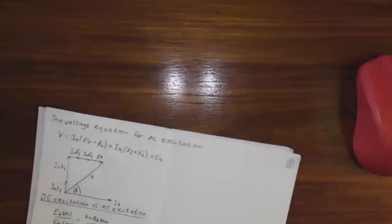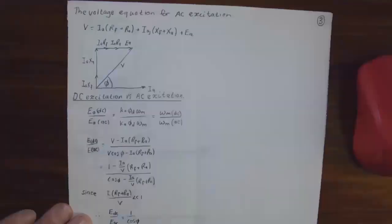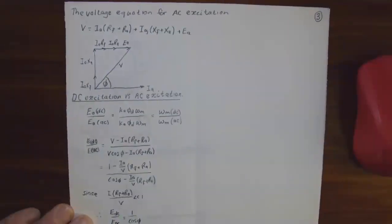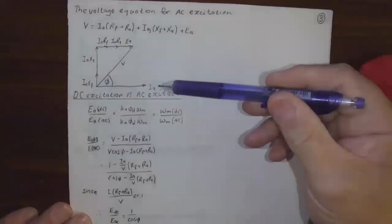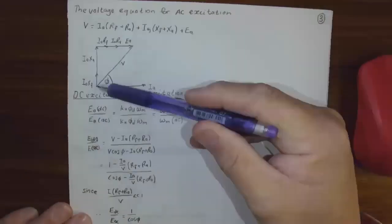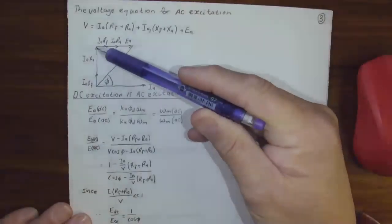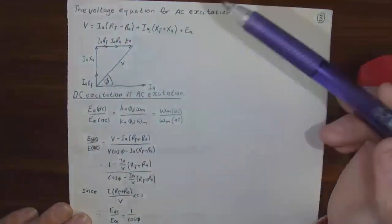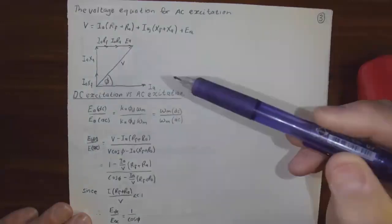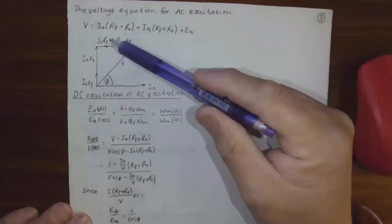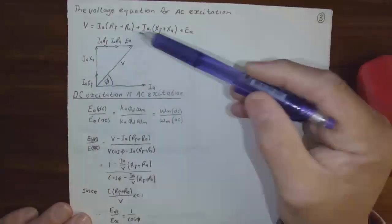The voltage equation for AC excitation: V is equal to I_a times r_f plus r_a plus I_a j times x_f plus x_a plus E_a. If we put that in a phase diagram, we've got I_a as the base, then I_a x_f, I_a x_a, and those things that are in phase with the current: I_a r_f, I_a r_a, and E_a.